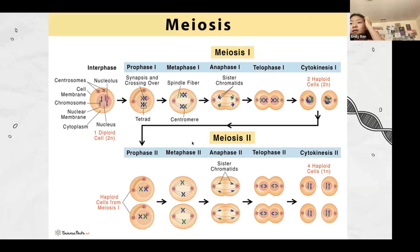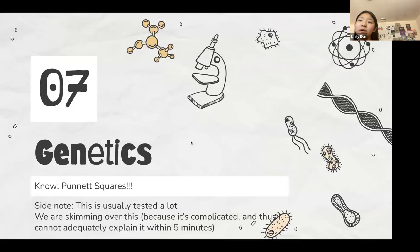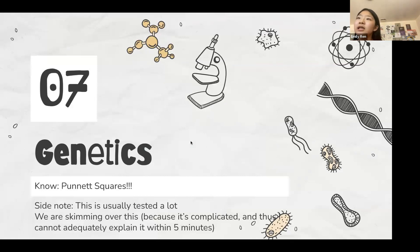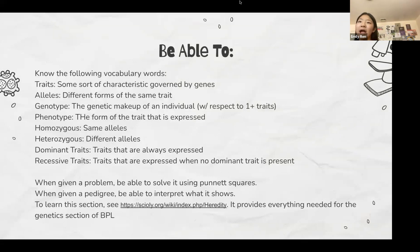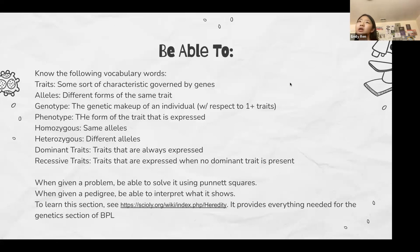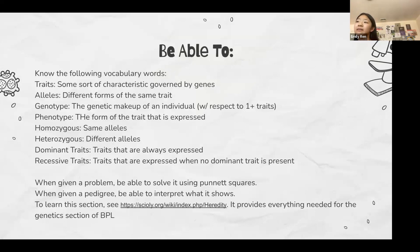Genetics is a pretty big part of bioprocess lab but unfortunately we don't have time to cover it fully. I've put some vocabulary words on the slide and linked a science olympiad heredity resource — that event covers everything you need to know and their past tests work as practice problems. What you need to do is be able to draw and understand Punnett squares and understand pedigrees.